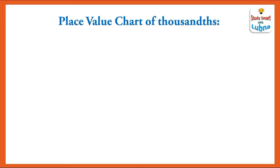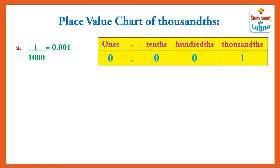Place value chart of thousandths. The first example is 1 upon 1,000, which is equal to 0.001. The place value of the first 0 is ones, then a decimal point, the next 0 is tenths, the third 0 is hundredths, and 1 is thousandths.